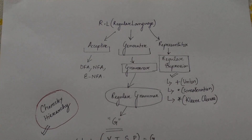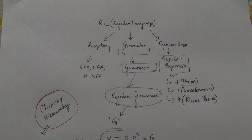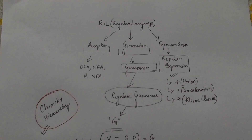As per unit 3 syllabus, we'll be starting off with unit 3 topics. We are going to cover the concept of grammar — context-free grammar — what the derivation process is, and what its simplification involves. We will cover two to three video lectures over this particular grammar and then get together for a few numericals.